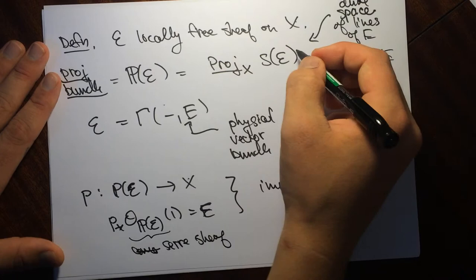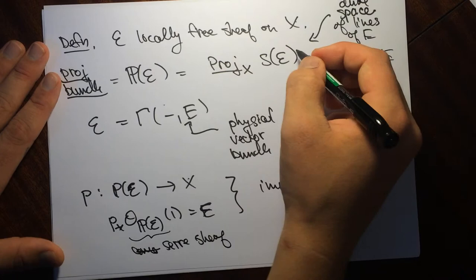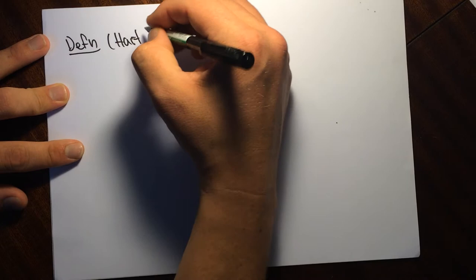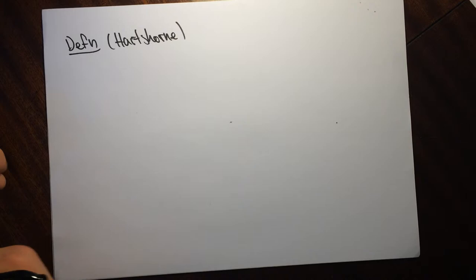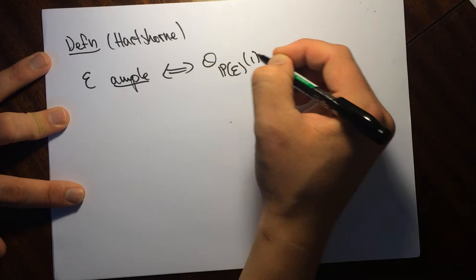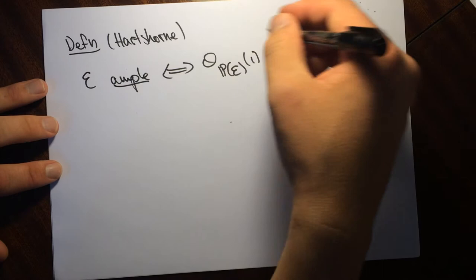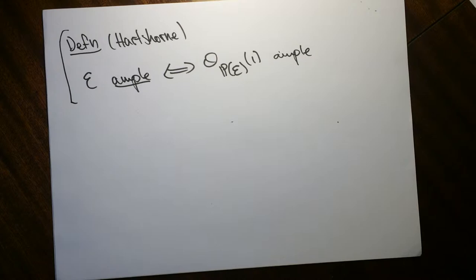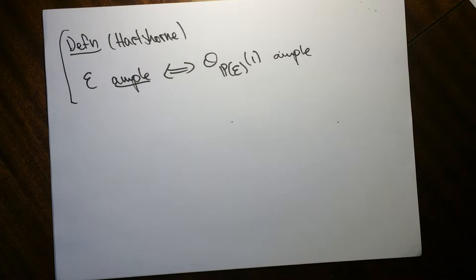A locally free sheaf E on X is ample if and only if O_{P(E)}(1) is ample. There was a kind of zoo of conditions for vector bundles to be ample back in the 70s, and this is the one that ended up sticking around — the good one that works.